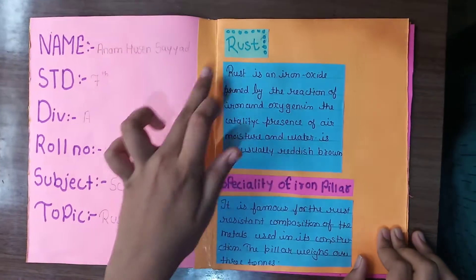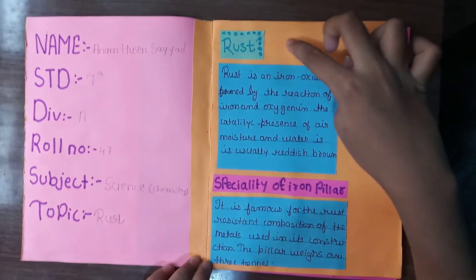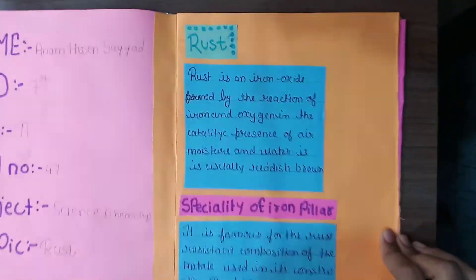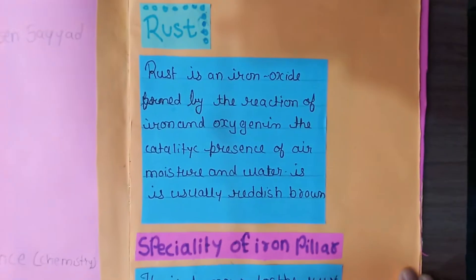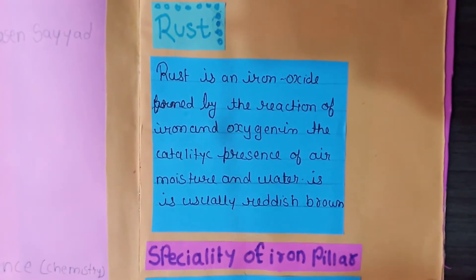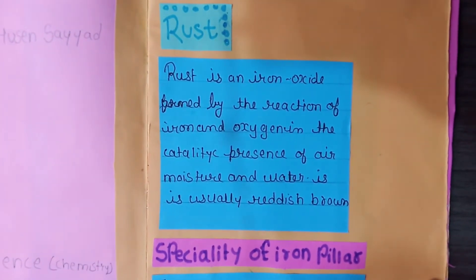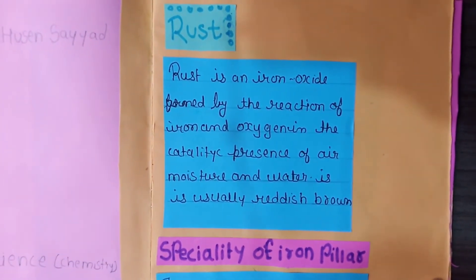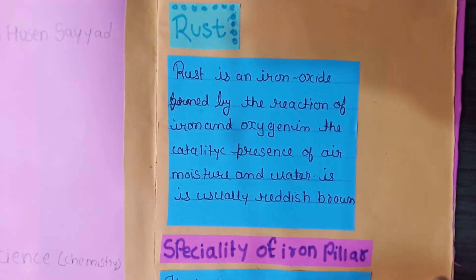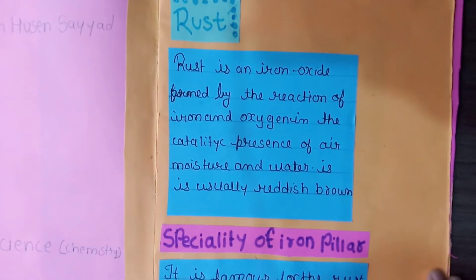Here is the information about rust. Rust is an iron oxide formed by the reaction of iron and oxygen in the air, in the presence of moisture and water. It is usually reddish brown.